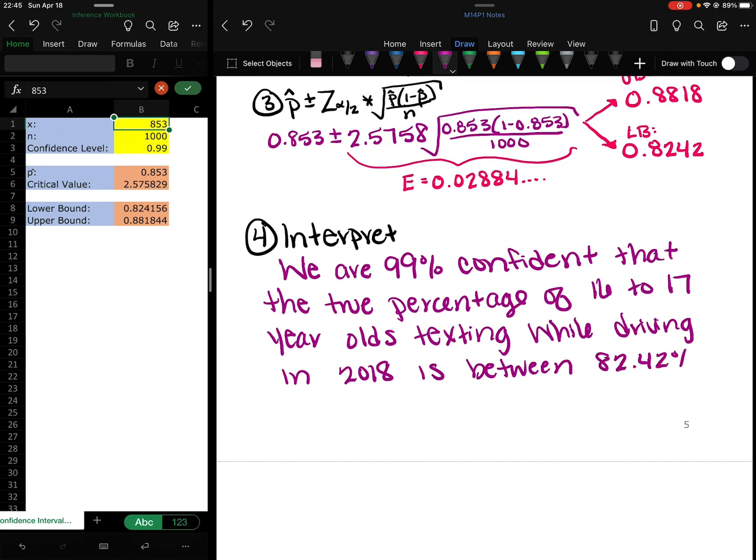And 88.18%. So somewhere between 82 and 88% of new drivers, because that's what 16 and 17 year olds are, they're new drivers. Somewhere between 82 and 88% of them are texting and driving.